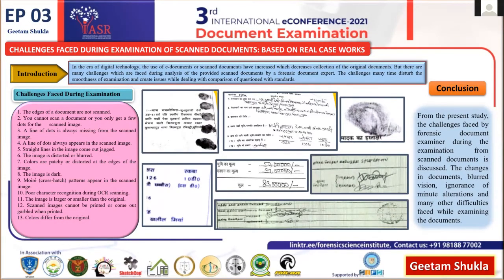So the document examiner cannot identify any alteration or chemical erasing or manual forgery from the scanned document. In the fifth picture, the quality of strokes of the signature and handwriting is not visible. Therefore, the line quality of letters, position and location of pen lifts, the skill of the handwriting, slope, and slant can differ from the scanned document with respect to the original document.